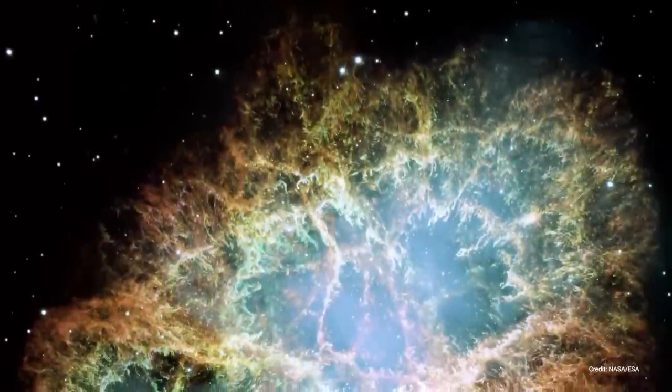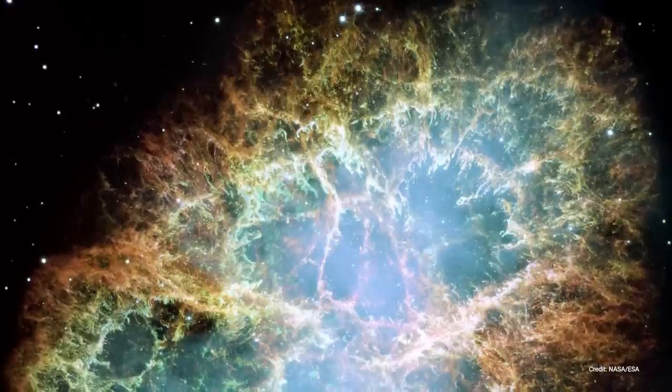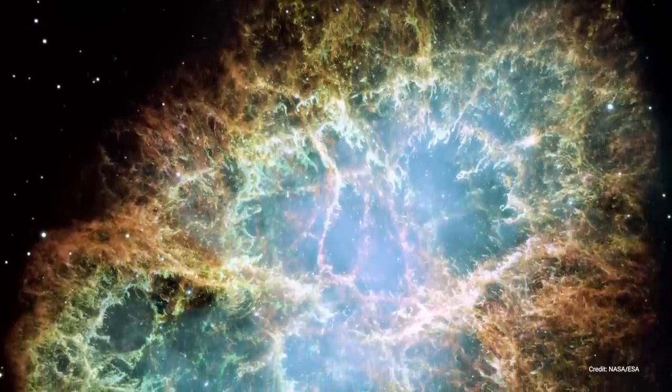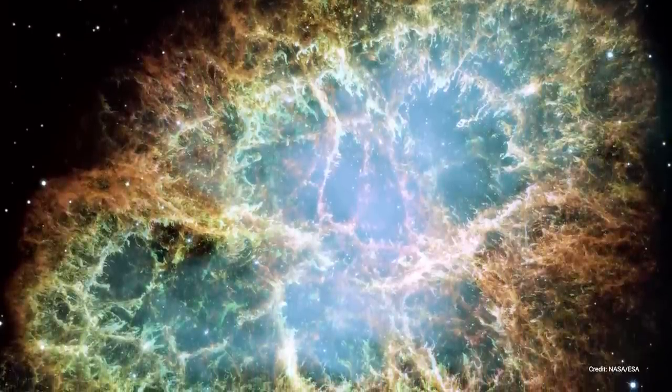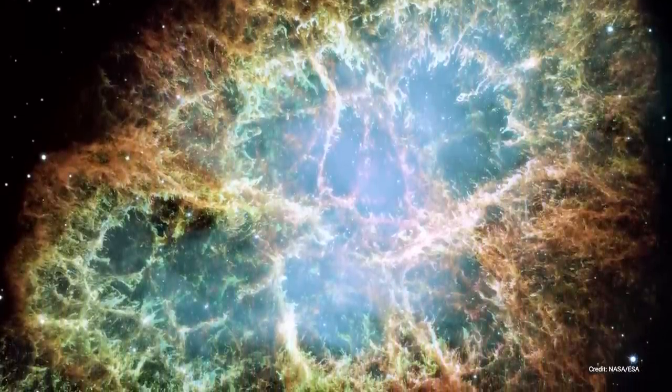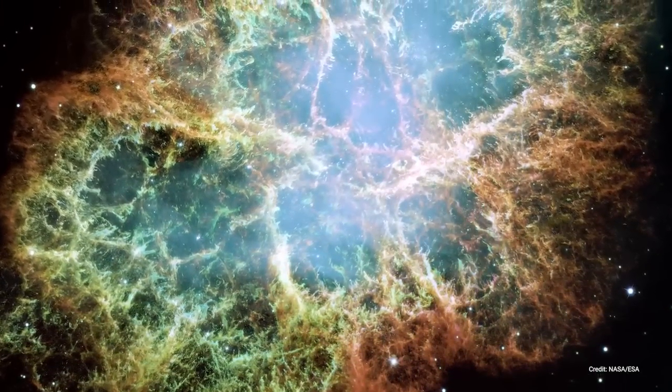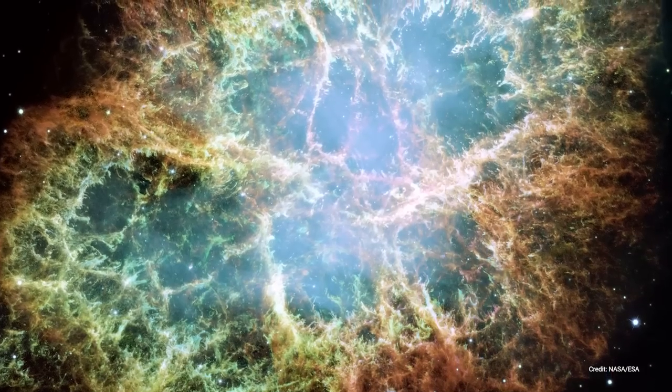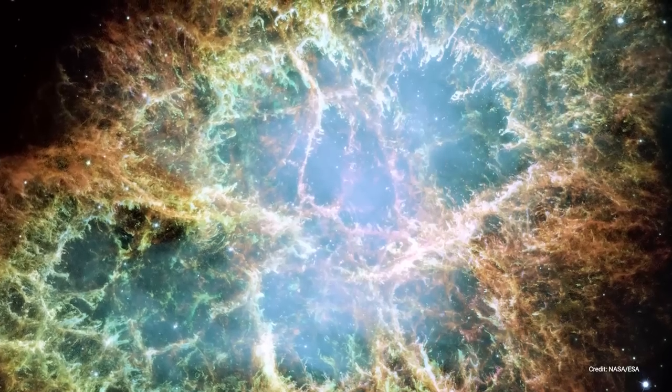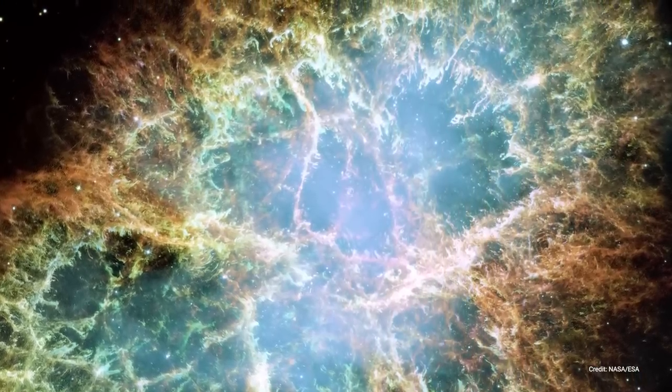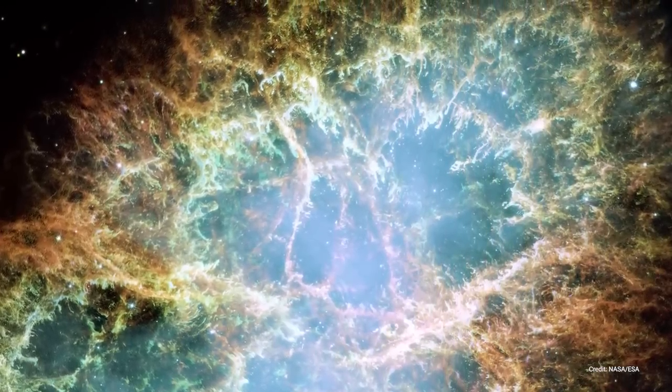The Crab Nebula, known also as M1, is the aftermath of a supernova, a star explosion, that was observed by Chinese and Middle Eastern astronomers in 1054 AD. This celestial spectacle is located roughly 6,500 light-years away from Earth in the constellation Taurus. The nebula itself is a cloud of dust and gas, illuminated by a pulsar at its core. A pulsar is a highly magnetized and fast-spinning neutron star, the super-dense remains of the exploded star. This pulsar emits pulses of radiation, including visible light, in our direction about 30 times per second, earning the nebula its Crab moniker due to its appearance.